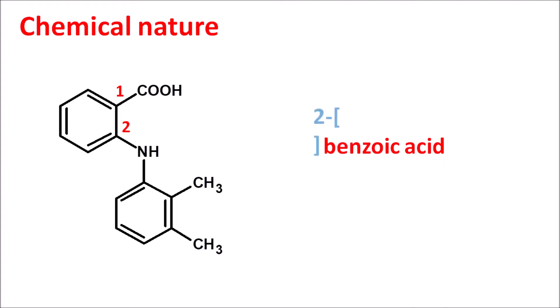At the second position is a side chain, which is an aniline ring. Numbering this ring: one, two, and three — this aniline ring has methyl groups at the second and third positions. Therefore we can write this as 2,3-dimethylanilino, giving the name 2-(2,3-dimethylanilino)benzoic acid. Mefenamic acid can also be considered as phenyl anthranilic acid with methyl substitution, hence the name mefenamic acid.